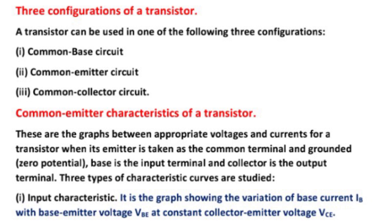Common emitter characteristics of a transistor. These are graphs between the appropriate voltages and currents for a transistor when its emitter is taken as the common terminal and grounded to zero potential. The base is the input terminal and the collector is the output terminal. Three types of characteristic curves are studied. First is input characteristics: the graph showing the variation of base current IB with the base emitter voltage VBE.